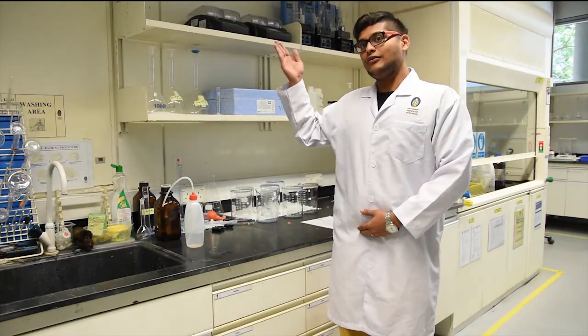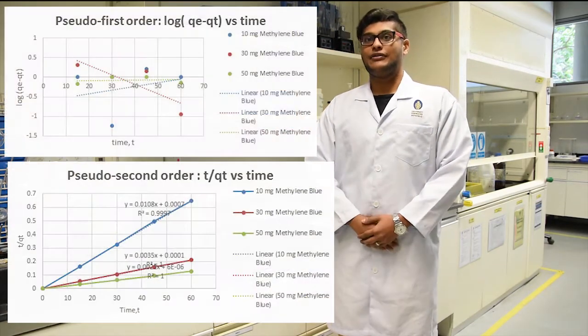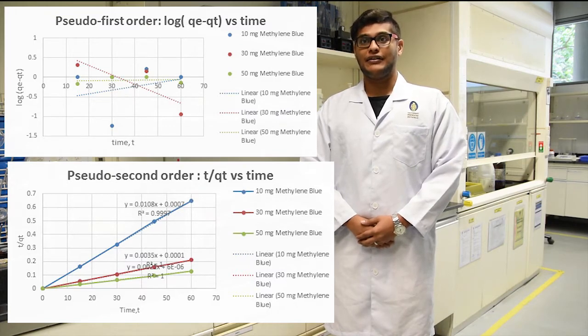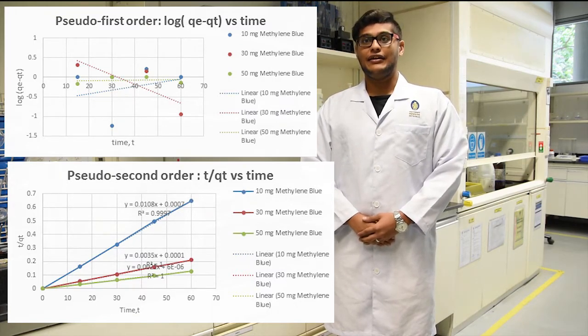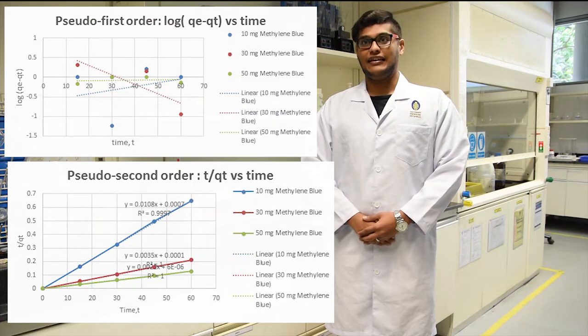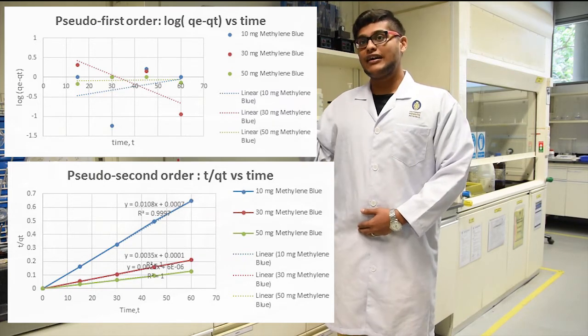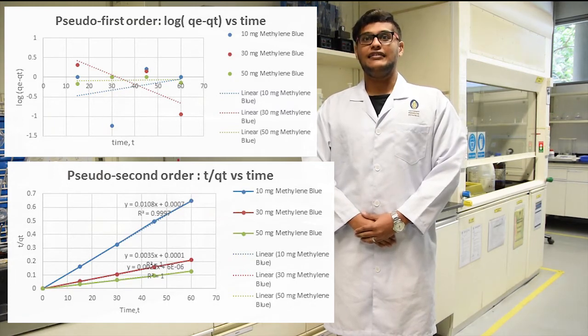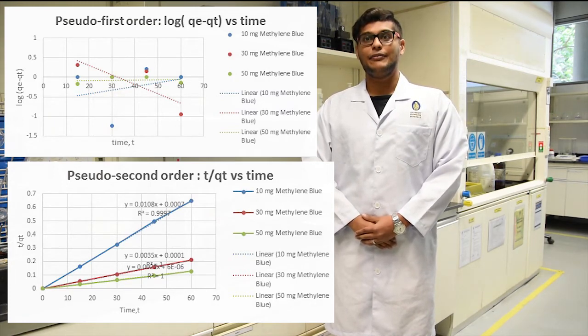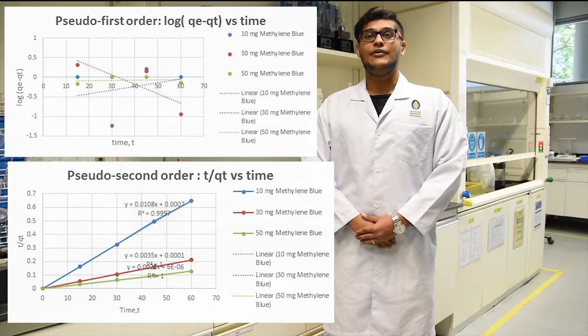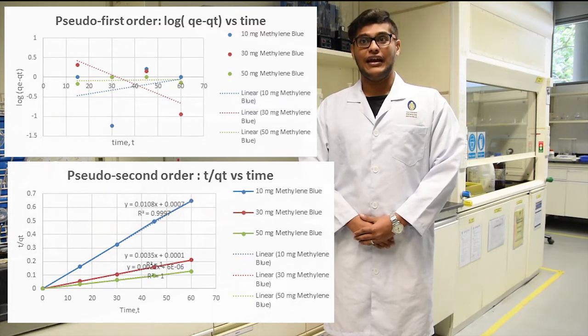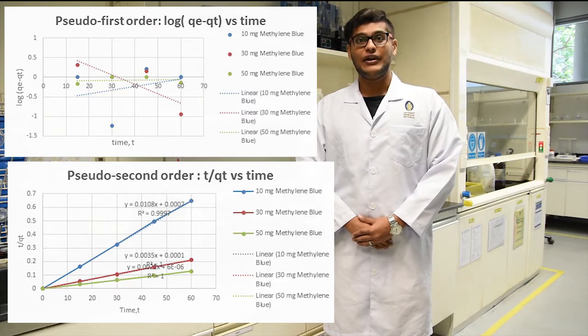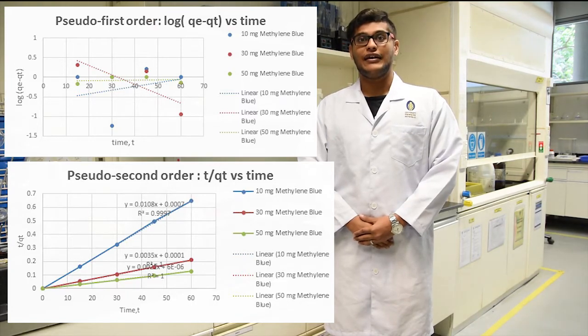The next two graphs, we are also able to determine the pseudo order for this adsorption experiment, which is the key element to study the reaction kinetics. From these graphs, pseudo second order is chosen as it is easier to determine the equilibrium concentration, which is denoted by Qe and the rate constant. This is because the Qe value we can obtain from the gradient itself.